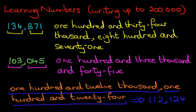Now have a close look at that. One hundred and twelve thousand, one hundred and twenty four. Writing numbers up to two hundred thousand is very easy. Just have a practice with a few numbers and you'll soon get the hang of it.